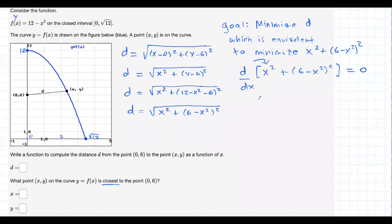The derivative of x squared is just 2x. The derivative of this guy using the chain rule is going to be twice (6 minus x squared) times the derivative of the inside function, which is going to be just negative 2x. That is equal to 0.